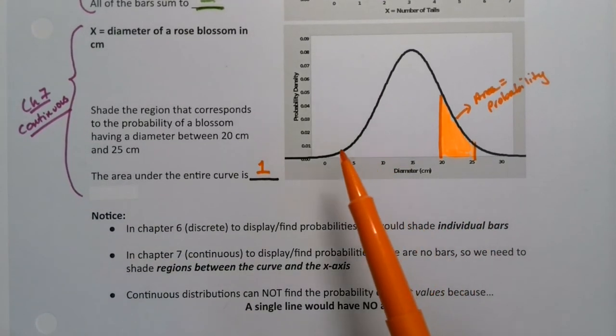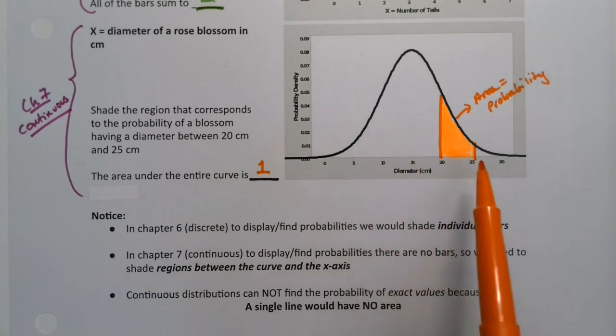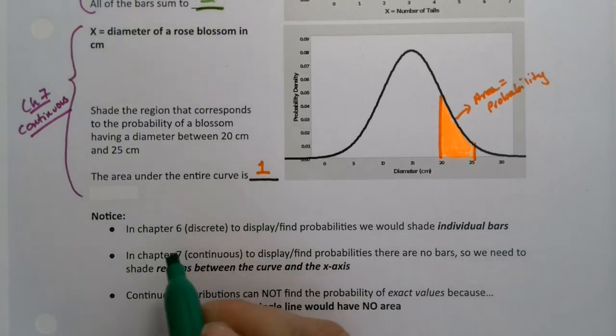Probability rules require that probabilities for the entire sample space must sum to 1. In Chapter 6, we're working with discrete probability distributions. We'll have to add up individual bars and so on.